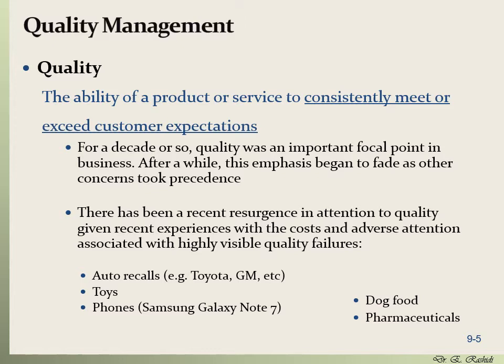Phones, for example — if you remember the Samsung Galaxy Note 7 which caught fire on several occasions. Also dark food, pharmaceuticals especially. There have been a lot of examples of that, and almost every year there is a recall and claim. Because of this and also because of competition in the market, quality is an important way to gain the market by meeting the expectations of the customer.